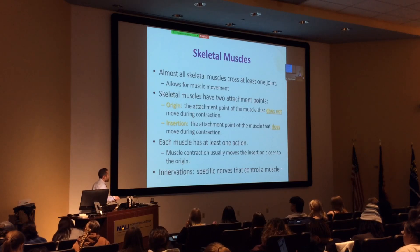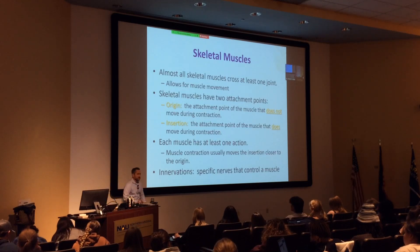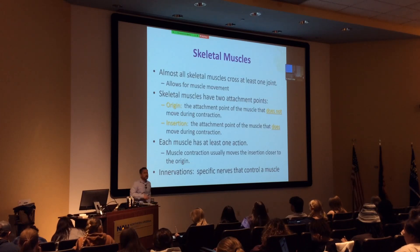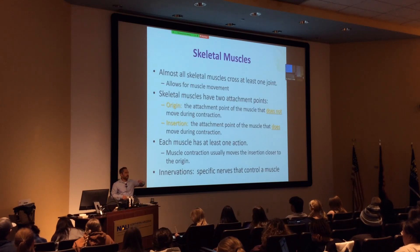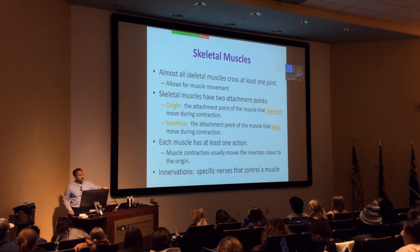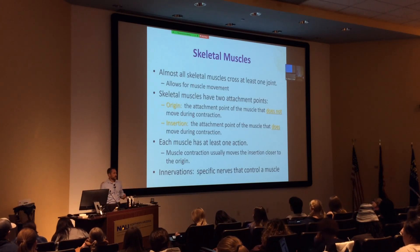Each muscle has at least one action; many have multiple actions. During a typical movement, the insertion moves closer to the origin because the origin stays stationary. Innervations are the nerves that control a muscle - this is where our last unit translates into this unit. You cannot get skeletal muscle contraction without a nerve firing. We'll look at disorders like Duchenne's muscular dystrophy and flaccid paralysis next week, which involve challenges with this nerve-to-muscle connection.